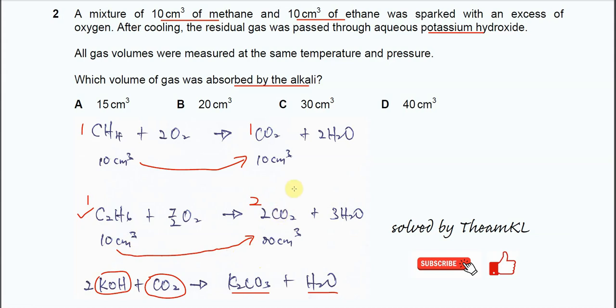Total CO2 that gets absorbed or reacts with the alkali is 10 cm³ plus 20 cm³, so total is 30. Answer is C. Okay, that's all. Thank you.